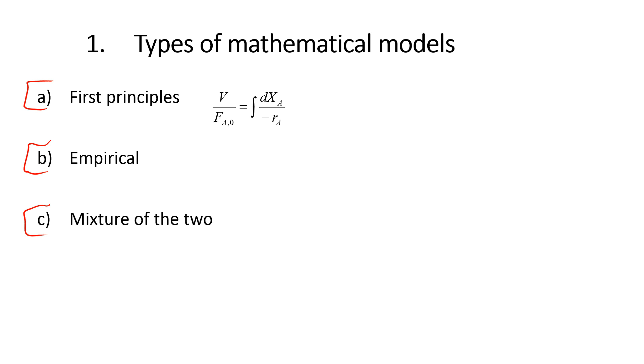First principles we know, for example, like reactor equations. Empirical, we've covered first order plus dead time. You could have state space, finite impulse response models, neural networks, there are a variety of linear and nonlinear options for empirical models.